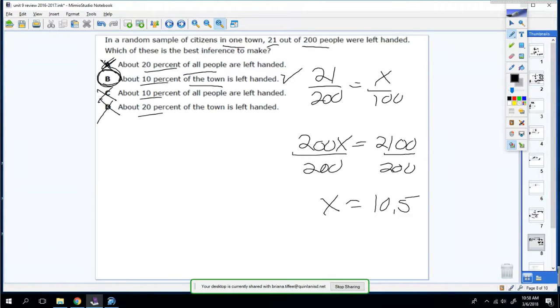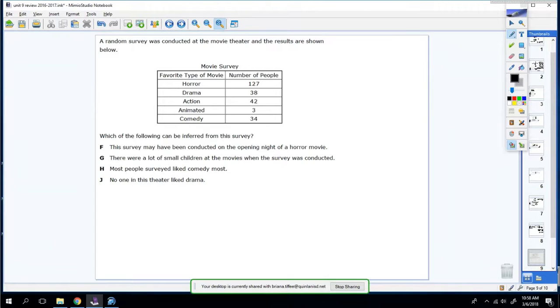A random survey was conducted at the movie theater and the results are shown below. Which of the following can be inferred from the survey? The survey may have been conducted on opening night of a horror film. That may be true because there's a lot of people at a horror film. Well, let's disprove the other ones.